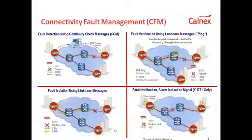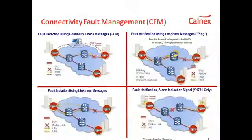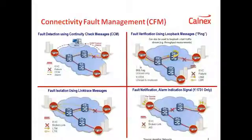Once we have detected and located the fault, we then need to notify the system of the fault. This can happen by way of management alarms — for example, the CCM timeout alarm seen in the previous CCM example — or in-band messages sent by the nodes themselves, for example an alarm indication signal, or AIS. So connectivity and fault management with OAM messages serve the purpose of detecting, verifying, locating, and reporting faults.